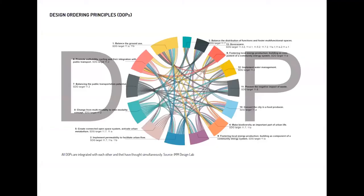The next phase is modification, or transformation. I considered the design order principles — the DOPs — simultaneously. They are a network of targets and all of them are integrated with each other. Each of them is also correlated with the Sustainable Development Goals by the United Nations Agenda 2030. For this presentation, I selected the most important ones to present.